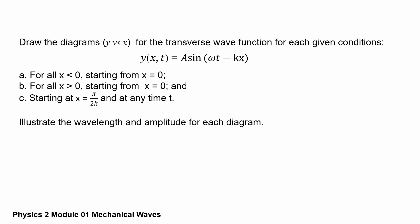Draw the diagrams y versus x for the transverse wave function for each given condition. We have a function y(x,t) = A·sin(ωt - kx). For letter A, all x values are negative starting from x = 0. For letter B, all x greater than 0 starting from x = 0. For letter C, starting at x = π/2k at any time t. Illustrate the wavelength and amplitude for each diagram.